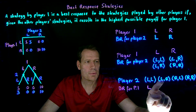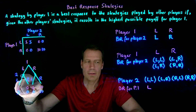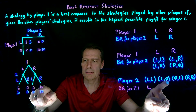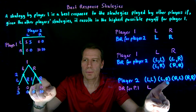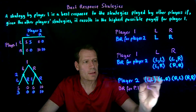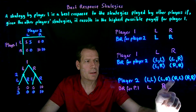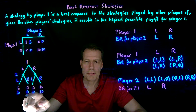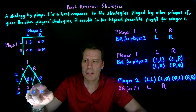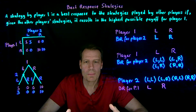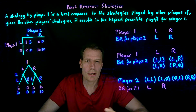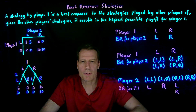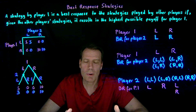If player 1 knows that player 2 plays left-right: if he goes left, she's going to go right and he gets a payoff of 5; if he goes right, she's going to choose right and he gets a payoff of 10. So the best response is to go right and get a payoff of 10. What if player 2 goes right-left? Then if player 1 goes left, she goes right and he gets 0; if he goes right, she goes left and he also gets 0. Since both strategies yield the same payoff, both left and right are best responses.